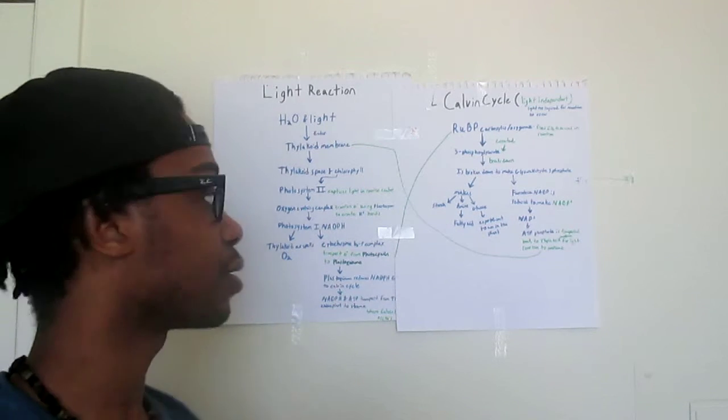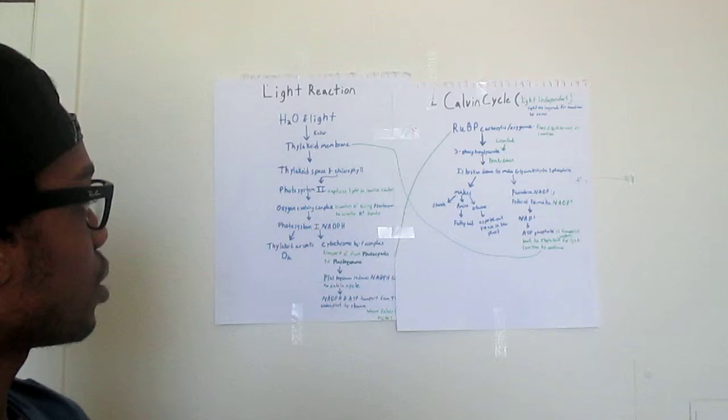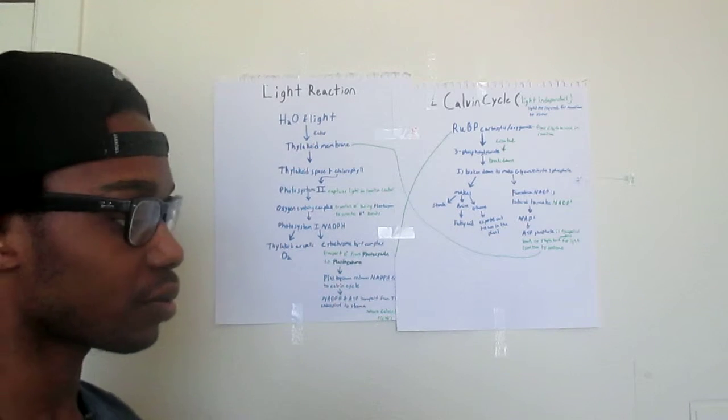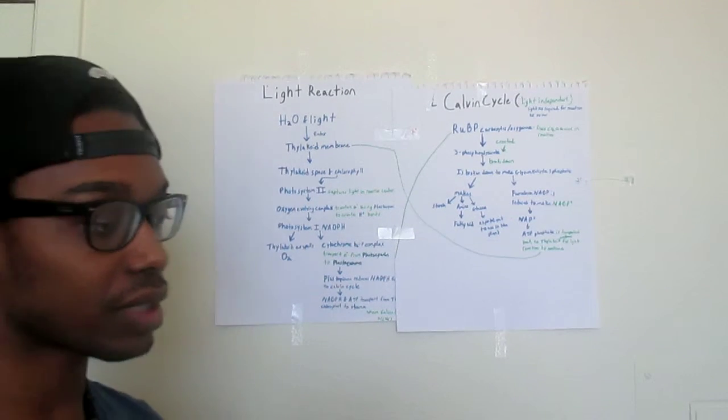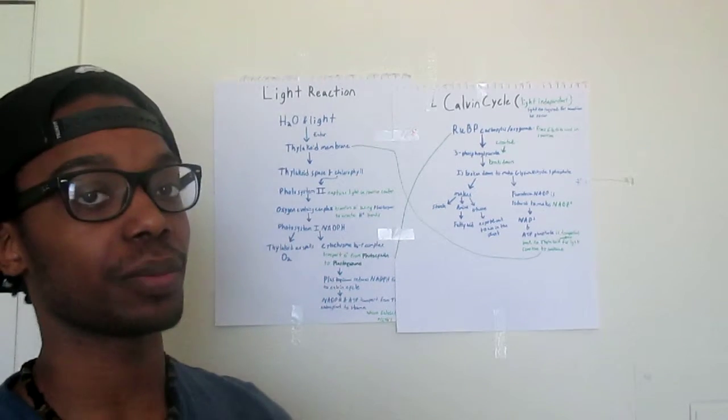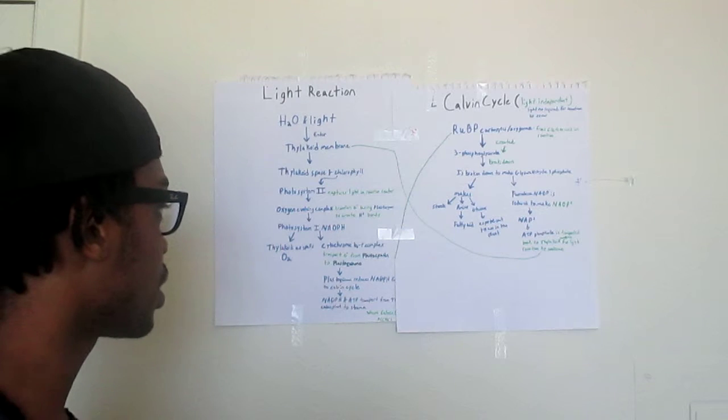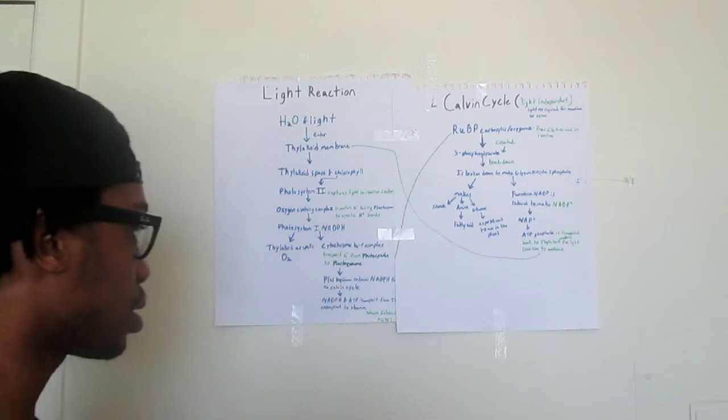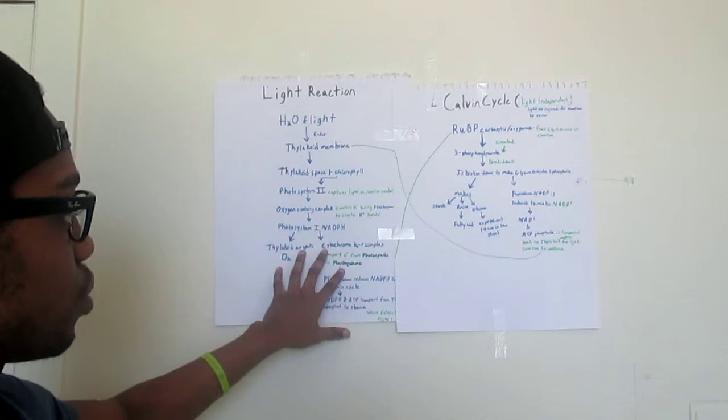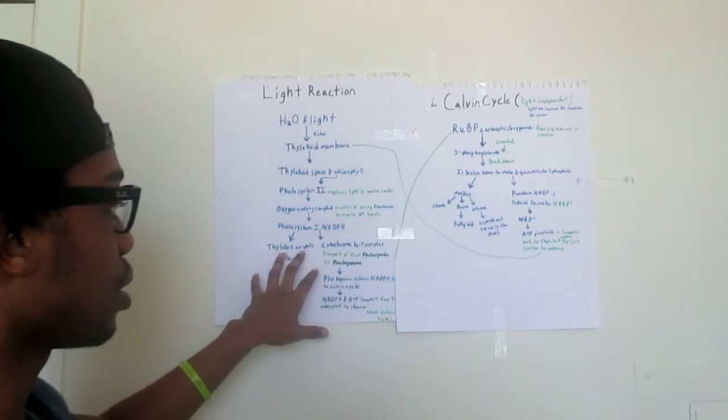Within the chlorophyll, the photosystem 2 captures light in the reaction center. It goes into the oxygen evolving complex which transfers electrons using plastocyanin to create hydrogen bonds. After that has occurred, photosystem 1 and NADPH turn goes into two different areas.